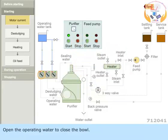Open the operating water to close the bowl. Open the sealing water until it flows from the water outlet.